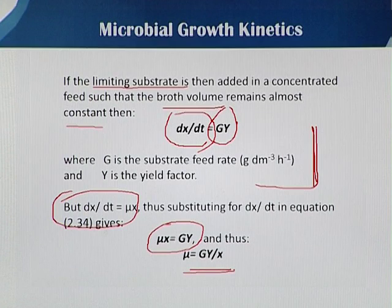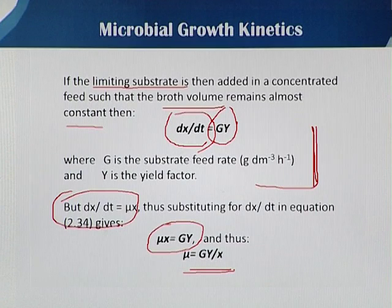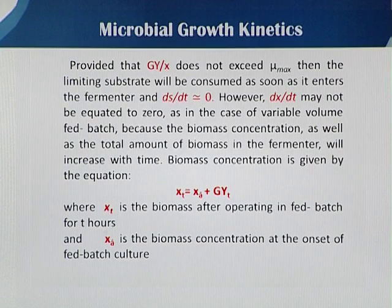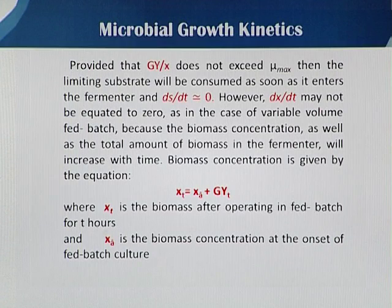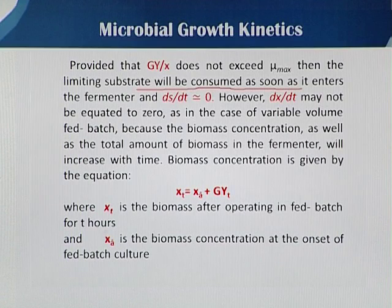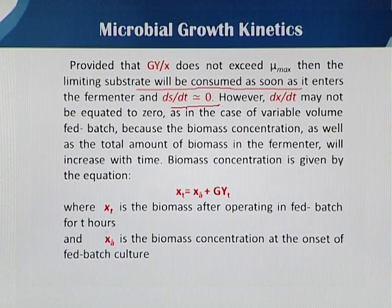If we know the feeding strategy rate g and the yield factor y, and divide by the biomass x, we can easily calculate the specific growth rate μ = g·y/x in a fixed volume fed batch, provided that g·y/x does not exceed μ_max. When μ is kept below μ_max, the limiting substrate will be consumed as it enters the fermenter, so ds/dt = 0.